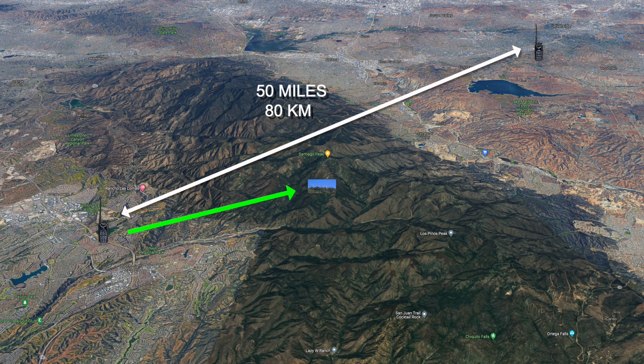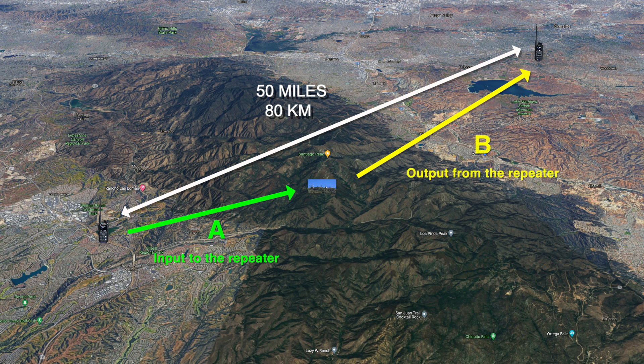When you talk on a repeater with your handheld or mobile radio, you transmit on a repeater input frequency. For our discussion, we'll call this frequency A. Your handheld radio transmits up to the repeater on A. At the same time, the repeater simultaneously retransmits your audio, sending it out on a new frequency, which we will call frequency B. This happens in real time, so it's coming into the repeater on A and going out on B.